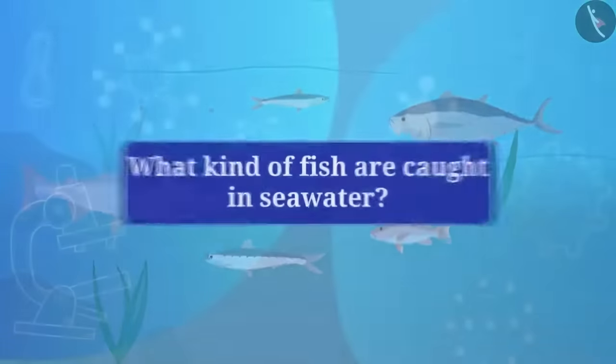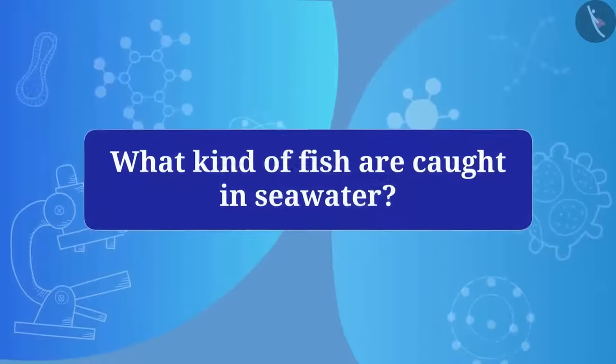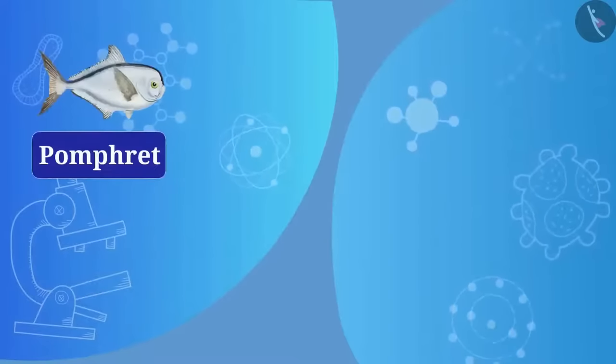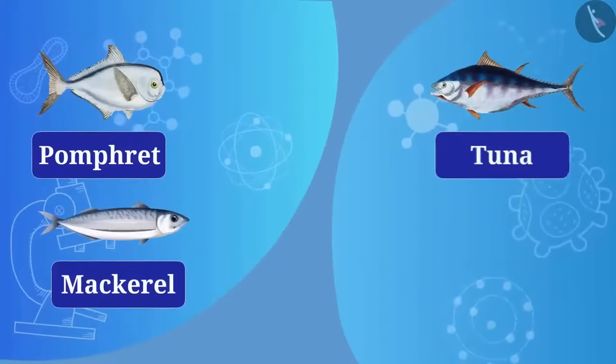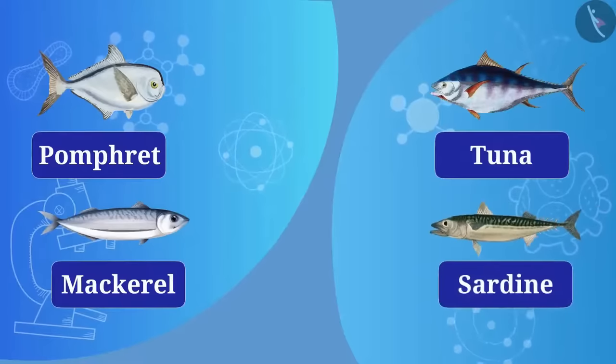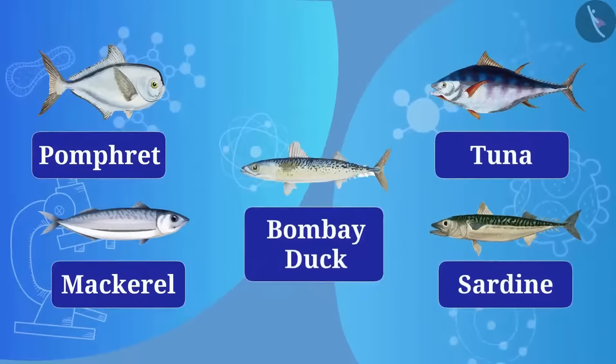Do you know what kind of fish are caught in seawater? Fish like pomfret, mackerel, tuna, sardine, and bombay duck are caught in the sea.